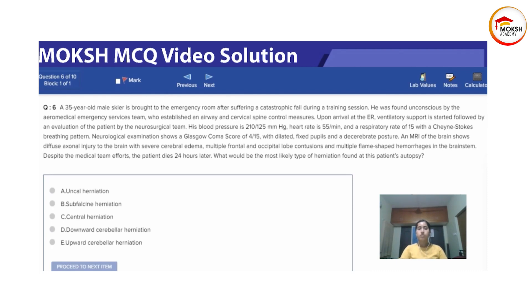An MRI of the brain shows diffuse axonal injury to the brain with severe cerebral edema, multiple frontal and occipital lobe contusions, and multiple flame-shaped hemorrhages in the brainstem. Despite the medical team's efforts, the patient dies 24 hours later.